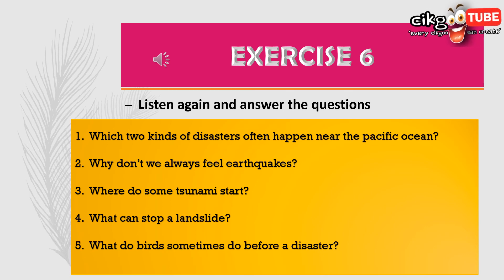The big problem with many natural disasters is that nobody knows when they will happen. However, some people believe that animals can feel when a disaster is about to occur. There are many stories about animals behaving unusually just before a volcano or an earthquake. Dogs cry and birds stop singing, for example. Maybe they have a special ability which human beings don't have, to understand how nature works.